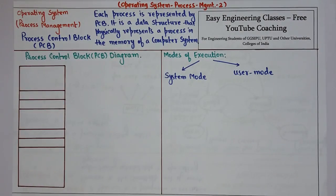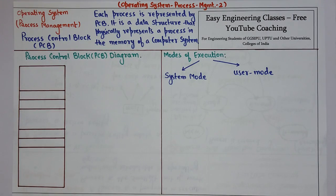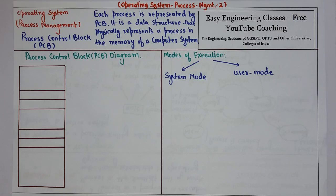Hello everyone. In this video we are going to see about the process control block. Each process is represented by a process control block. It is a data structure that physically represents a process in the memory of a computer.